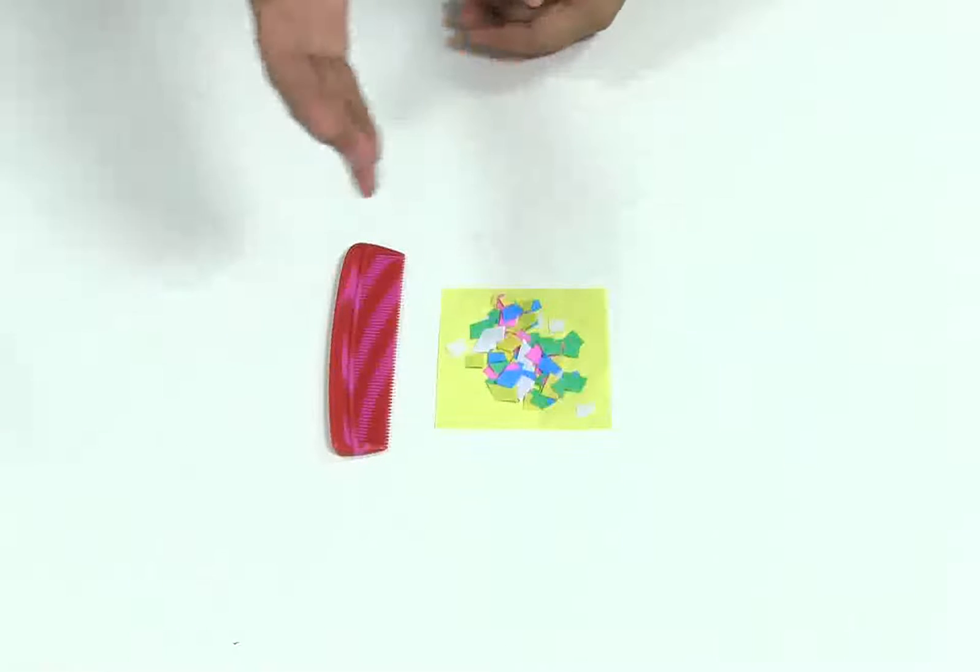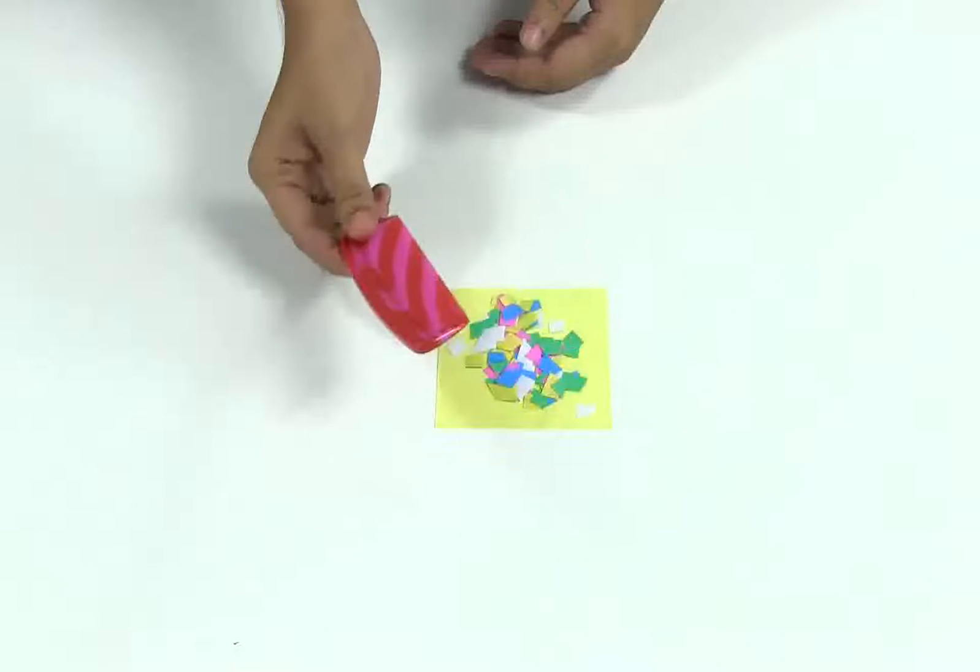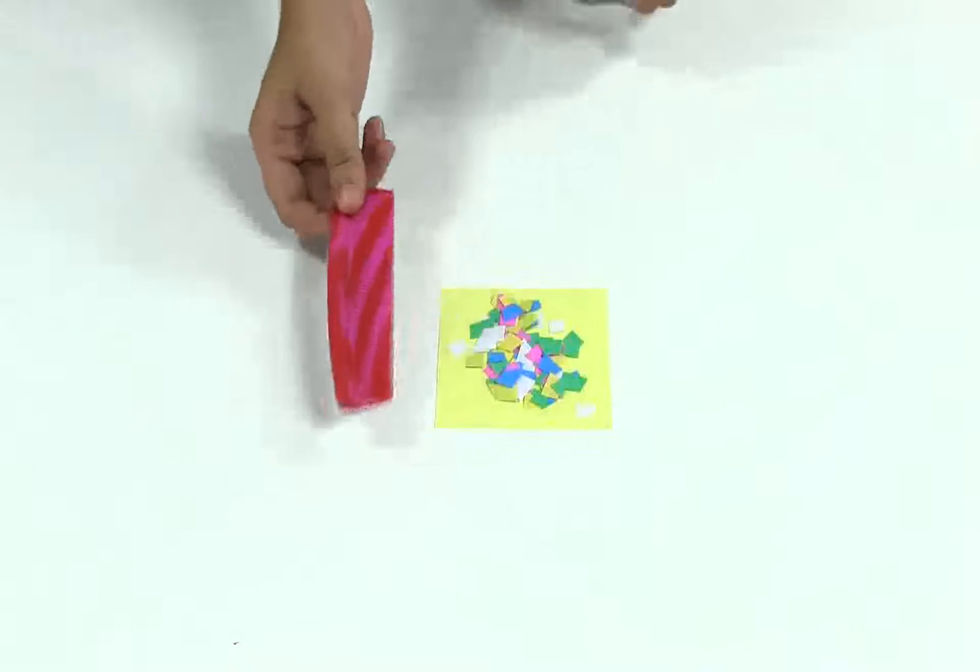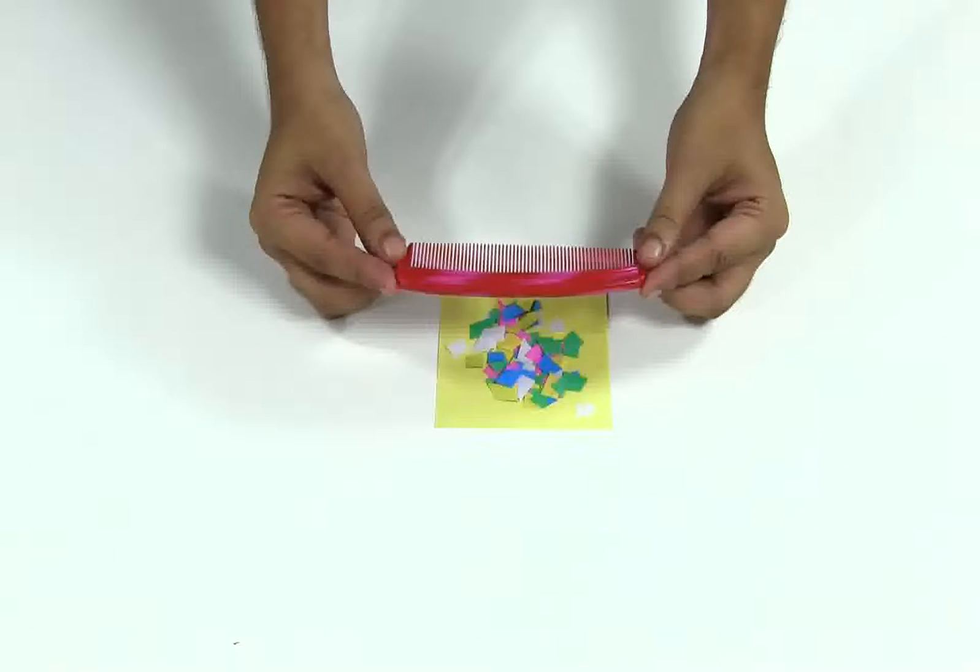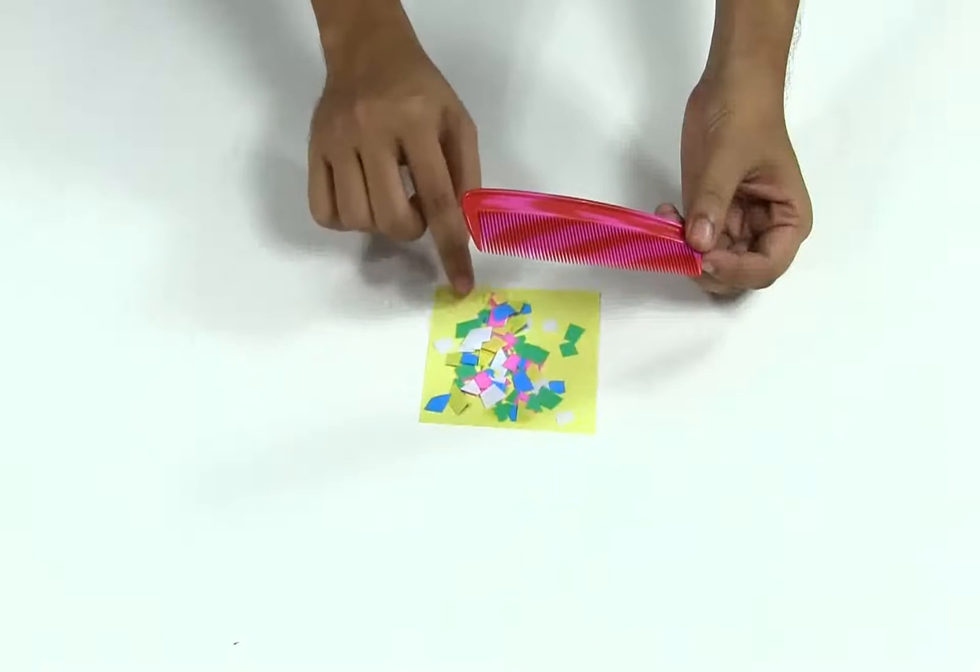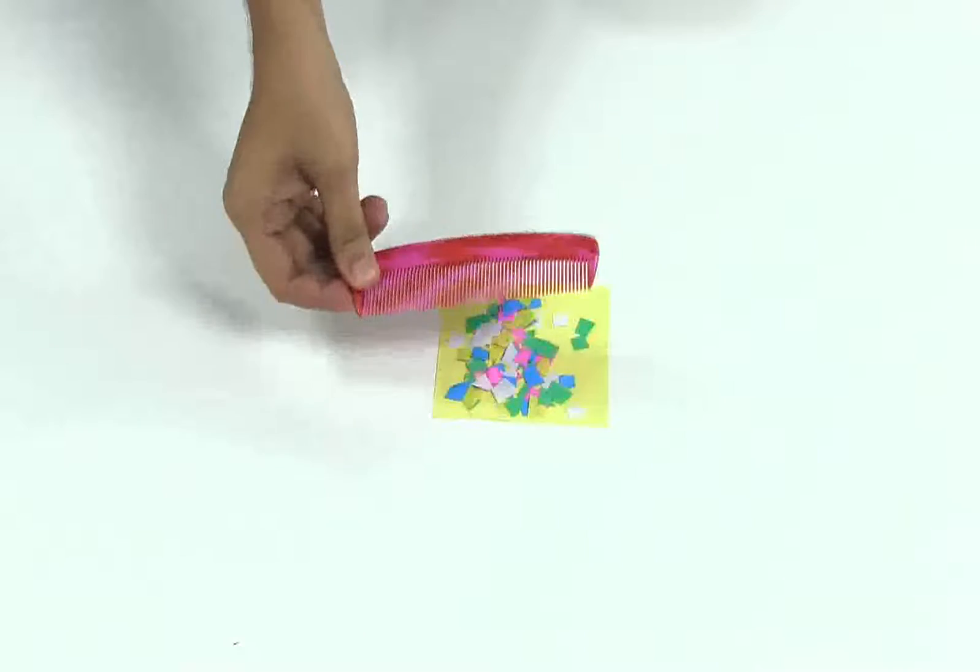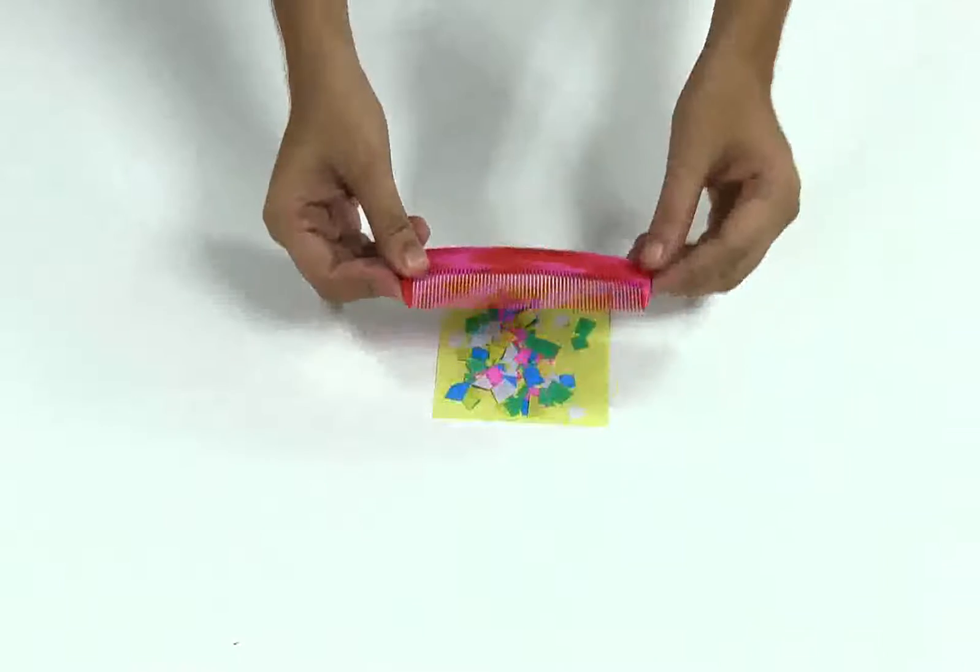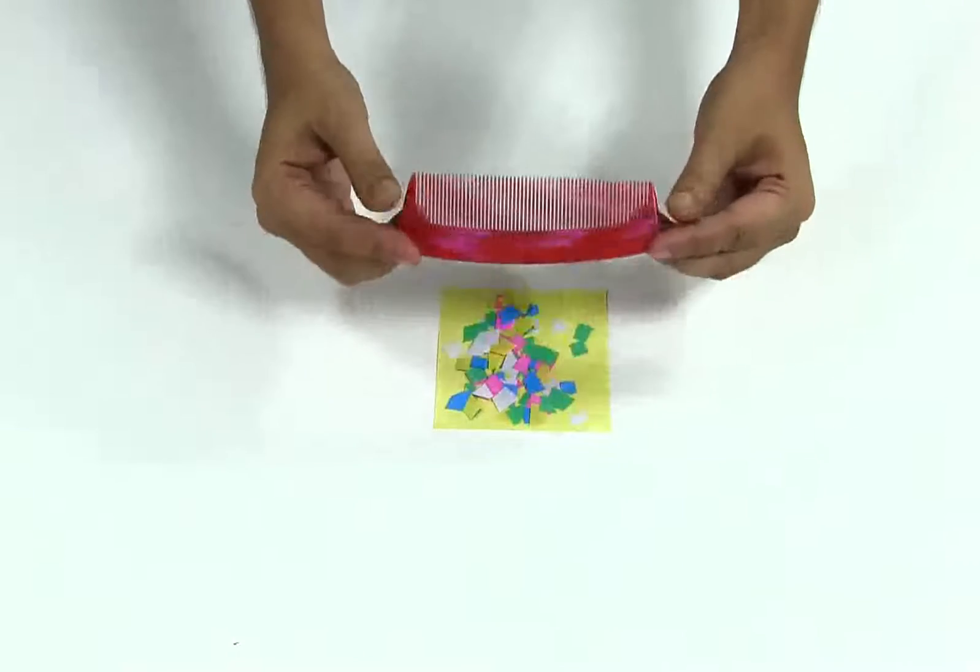Our first experiment is comb magnet. We are going to turn this ordinary plastic comb into a sort of magnet. First, let's see if this comb is already charged. If it is charged, it will attract these paper pieces. No, it is not attracting these paper pieces. That means this comb is not charged.